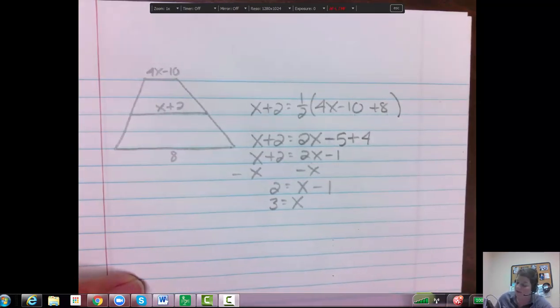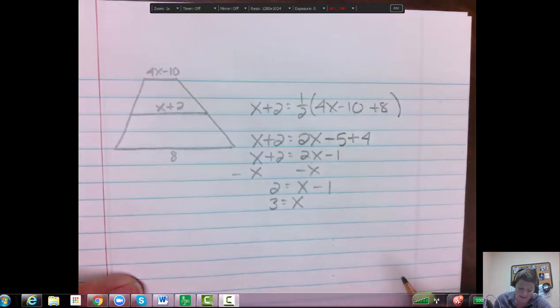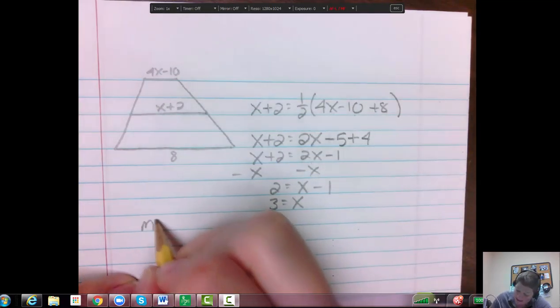Still don't know the length of that midsection, but I now know x. 3 plus 2 is 5, so I can get 5. So the midsegment is equal to 5 units, you know, inches, whatever unit they use.